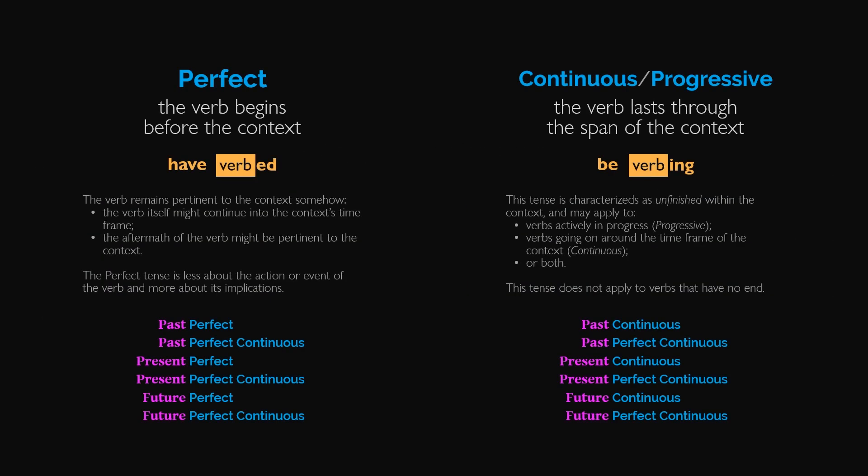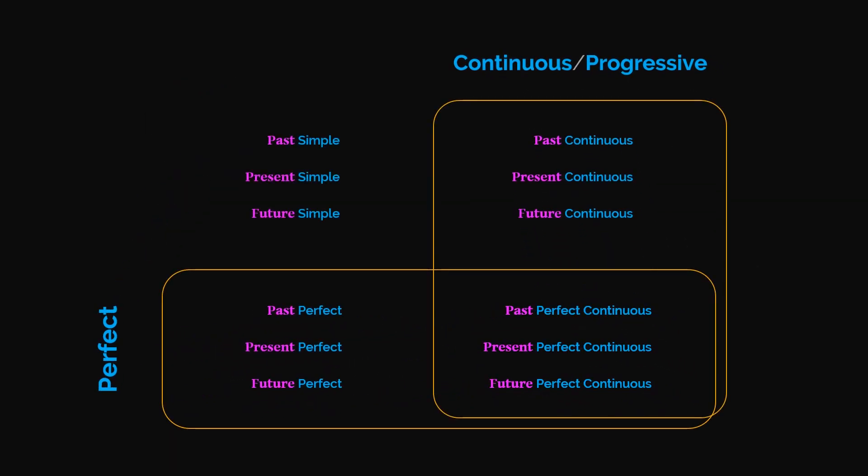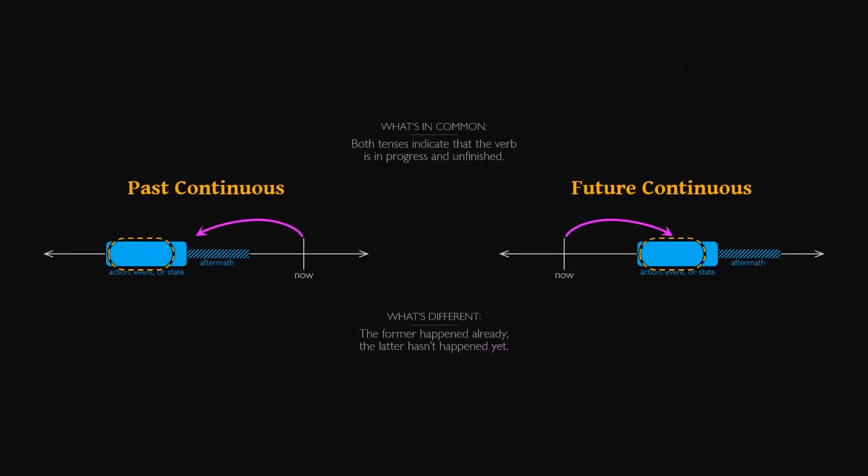There are more details to explore about the perfect aspect and about the continuous aspect, so you can check out other videos from Insights to English to learn more. Even each tense combination has its own nuance, so they are typically presented one at a time. But it helps to observe the big picture as well, in order to identify what similar tenses have in common, and understand how to switch from one tense to another simply by altering your perspective.